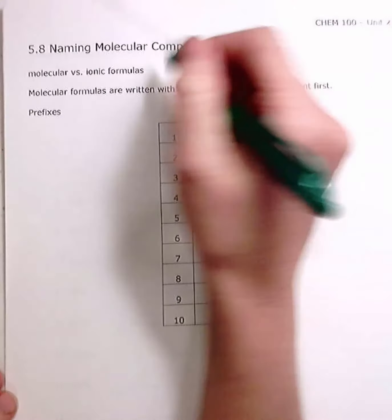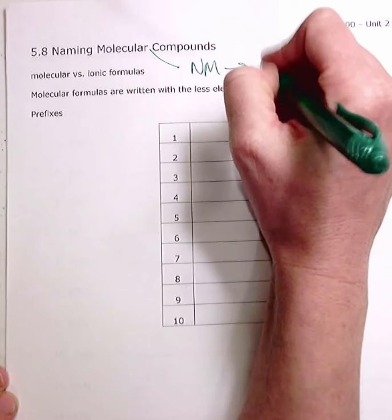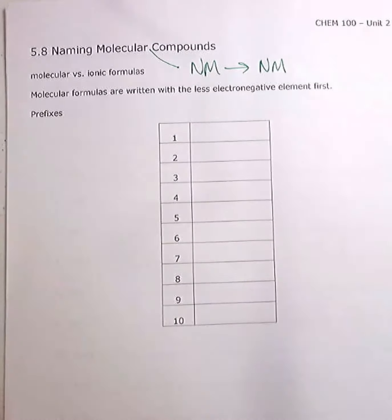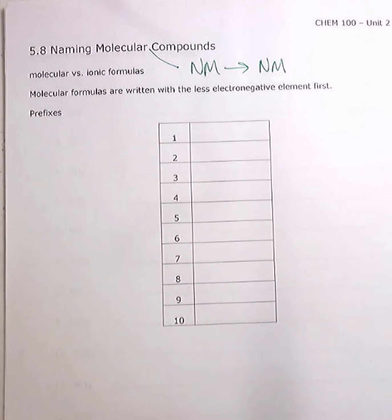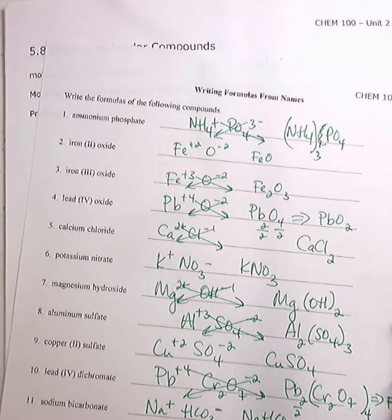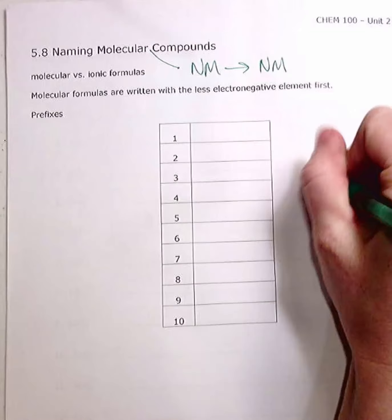Molecular compounds are non-metal to non-metal. So you're looking at the right side of the periodic table. So molecular formulas are written with a less electronegative element first. We use prefixes here. So you have to be very careful switching back between ionic nomenclature, which we just saw here, versus molecular nomenclature.